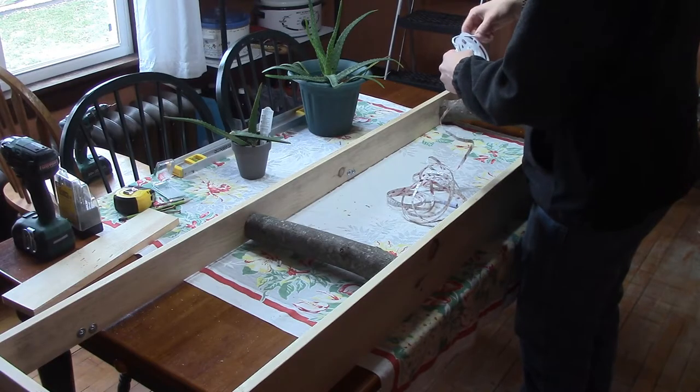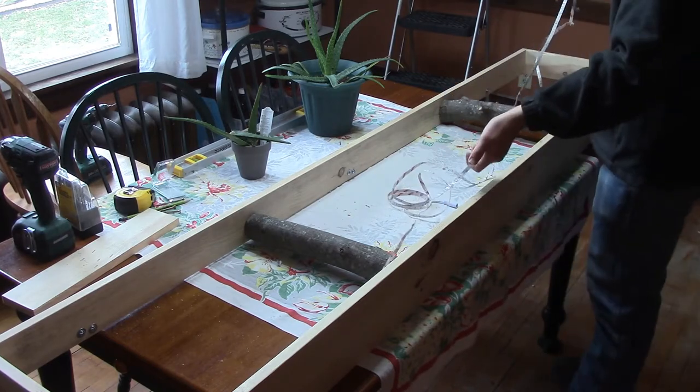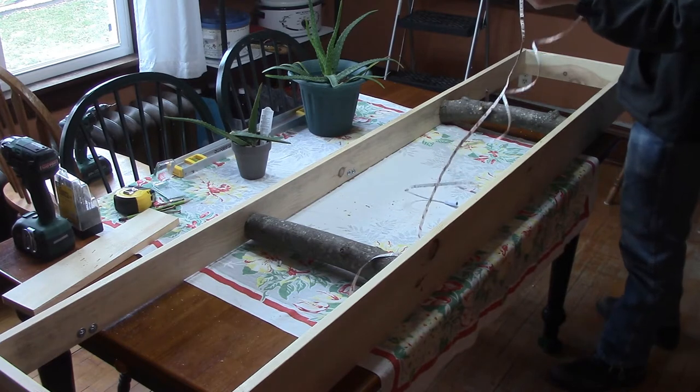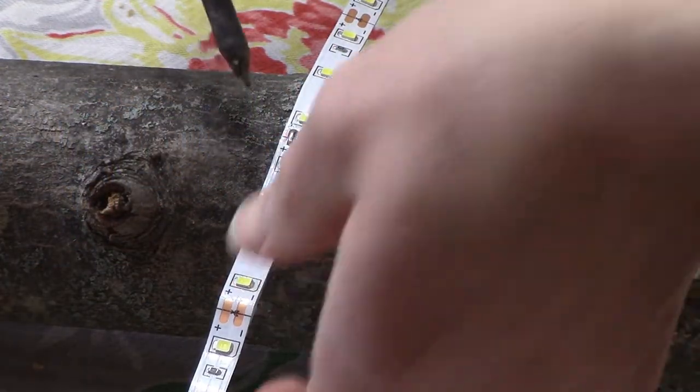Now we get to the fun part, installing the lights. The product I received was 10 meters long, which I split into two 5 meter lengths, so I could put one on the top facing down and one on the bottom facing up. There was a solder joint right in the middle of the strip, so I just unsoldered it, but these lights can be cut to length every few LEDs.